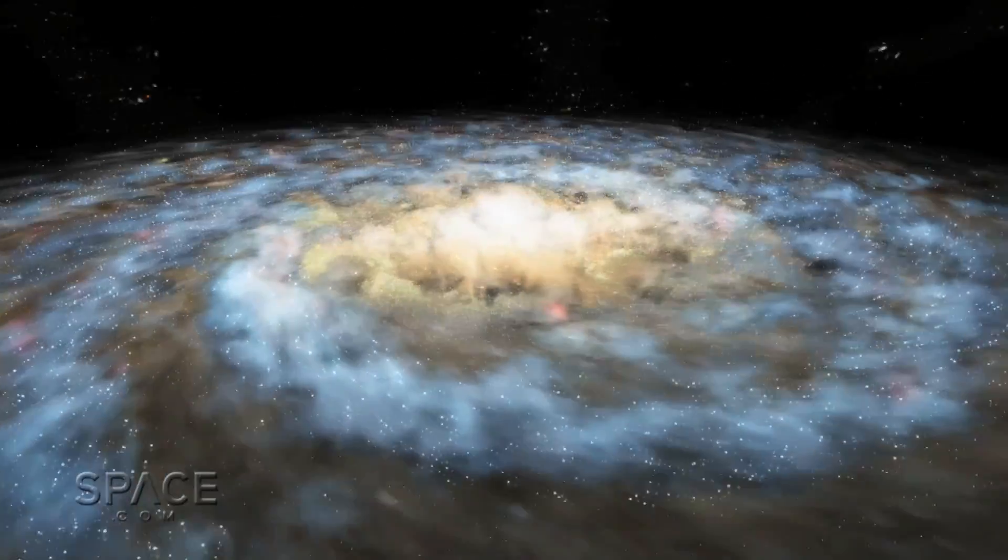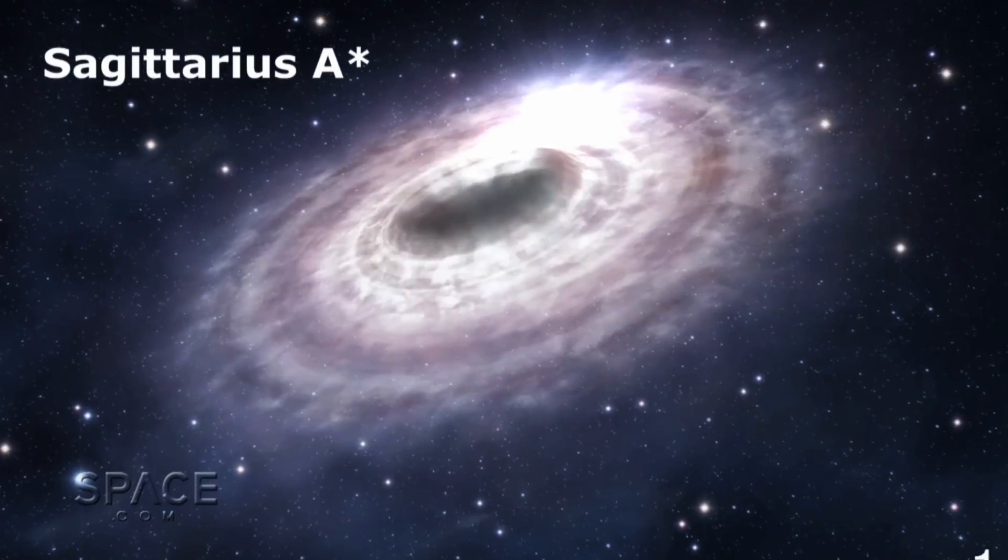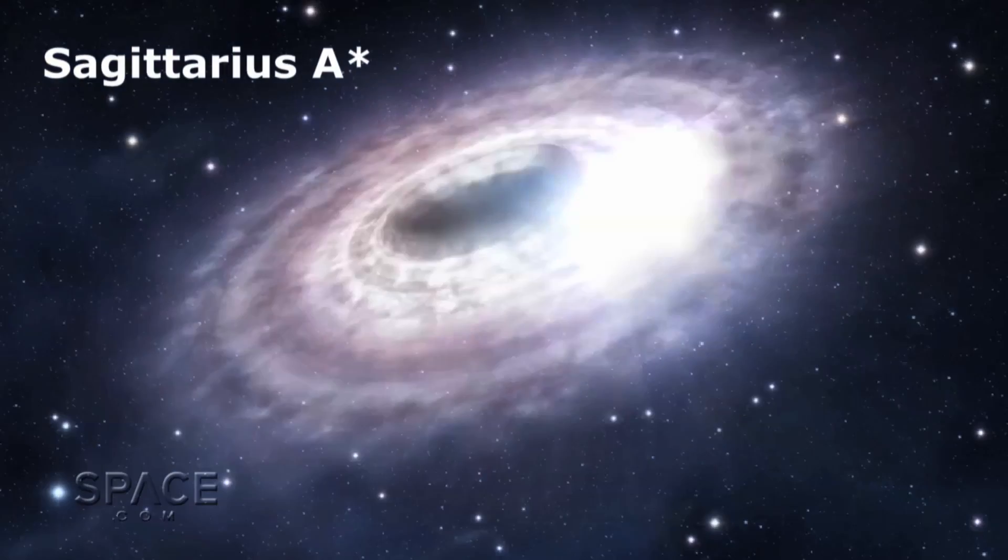The black hole at the galactic core, known as Sagittarius A-star, is about 4 million times more massive than our sun.